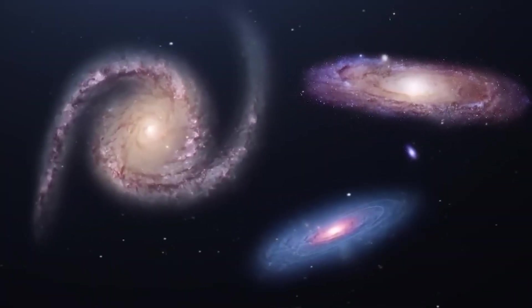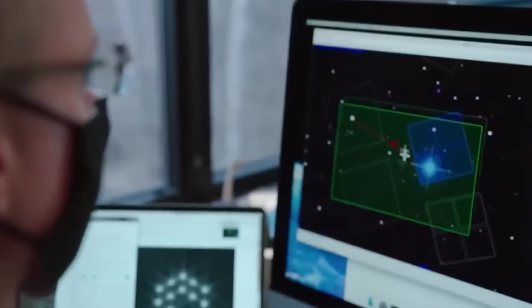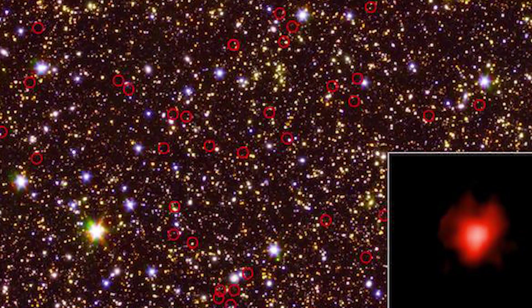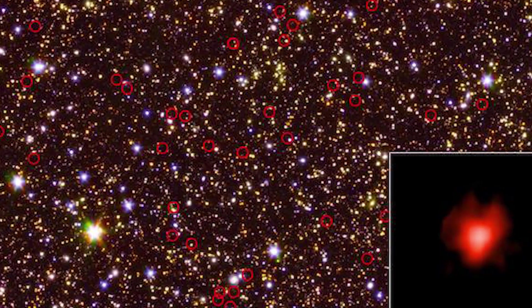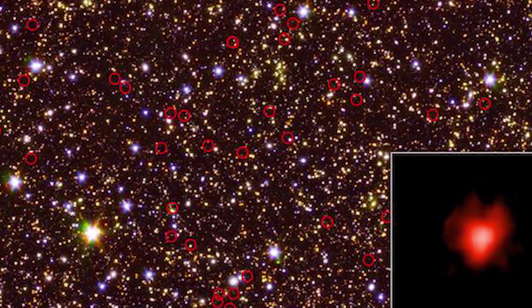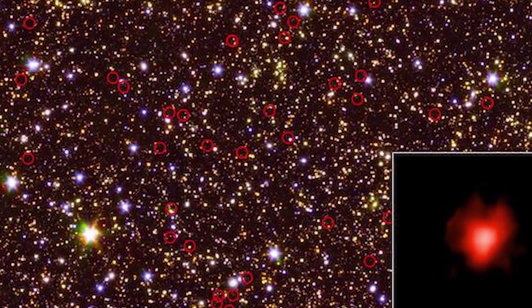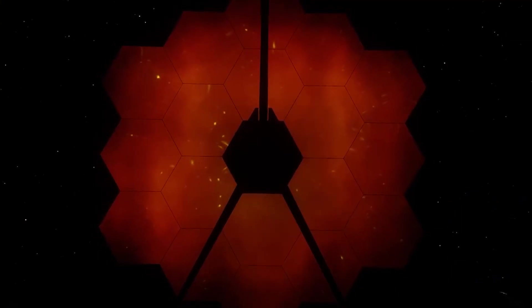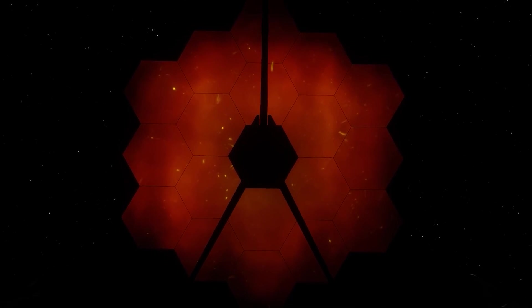Another stunning discovery stumped scientists when researchers found primordial galaxies at the edge of the universe. They were skeptical about their authenticity. Some thought they might be nearby galaxies in disguise, so they shared the data with other scientists around the world hoping for the best. Amazingly, the James Webb Space Telescope confirmed that these ancient galaxies are real.